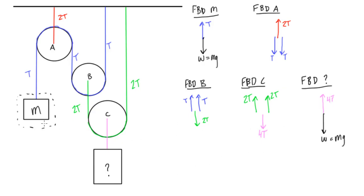If we say that the hanging mass m is 10 kilograms, for example, then this unknown mass would have to be 4 times as much — equal to 40 kilograms. We went through this symbolically and can now plug in numbers at the end.